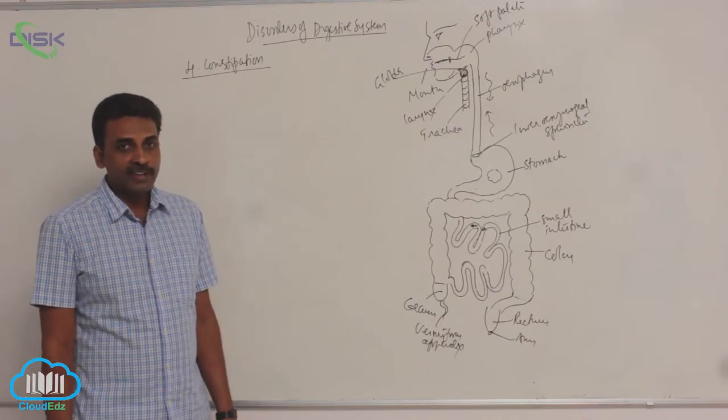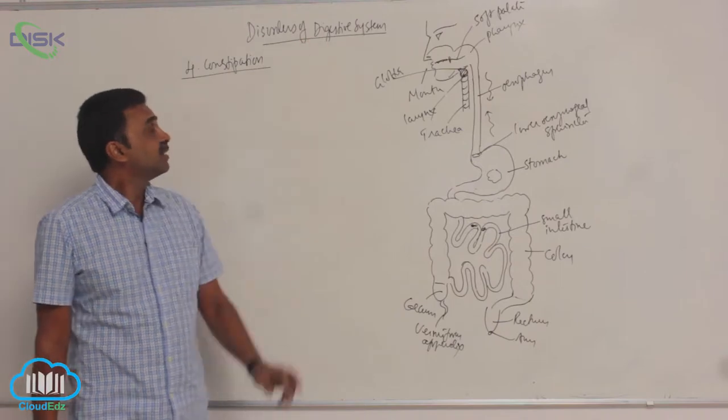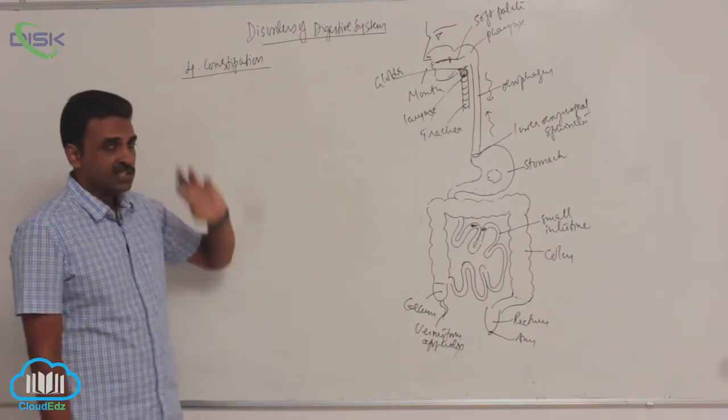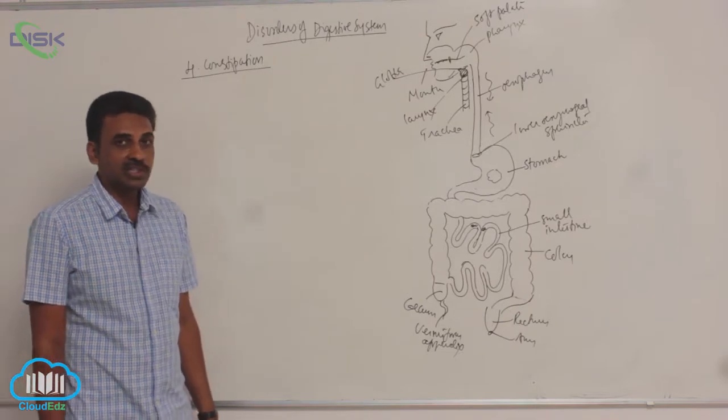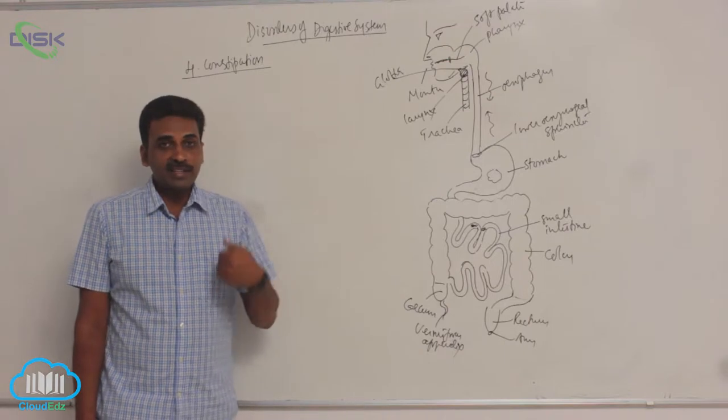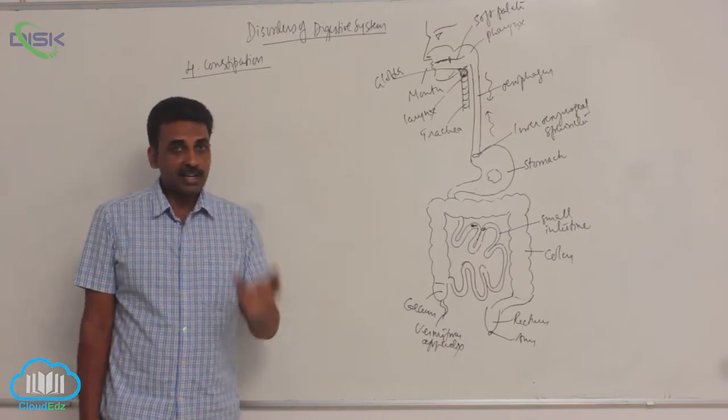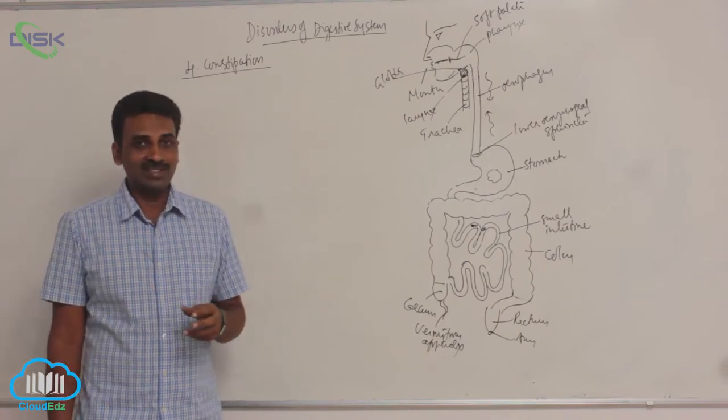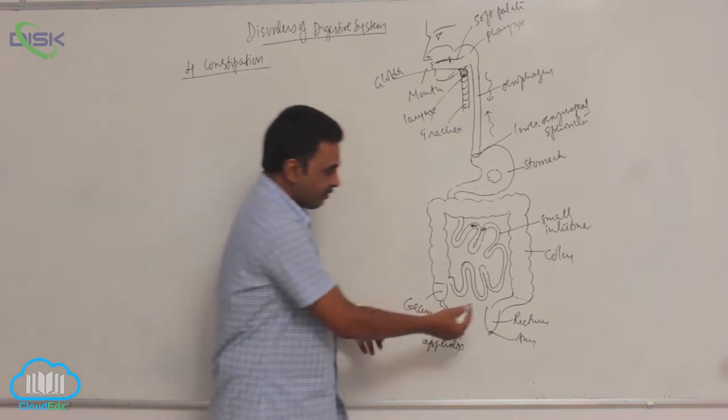The next digestive disorder is constipation. During constipation, there is a failure of voiding of feces. Voiding means discharge, so the fecal matter is already somewhere in the rectum, and there is a failure of pushing out that fecal matter.